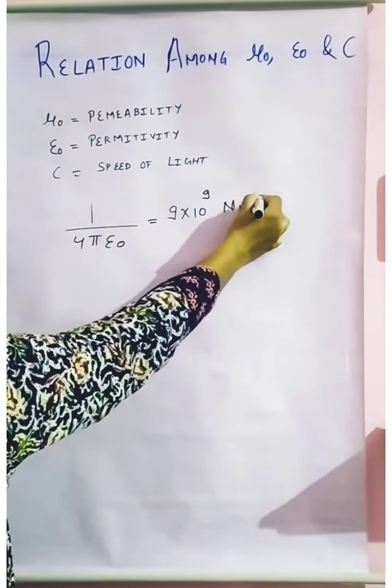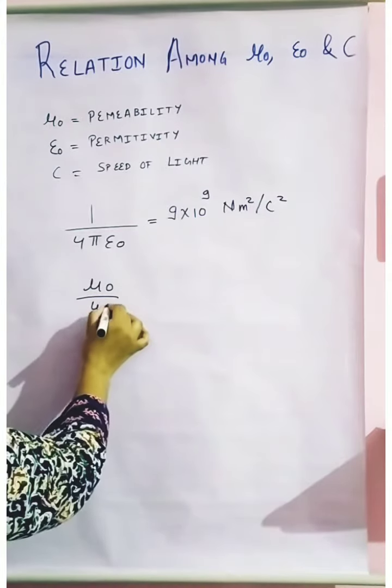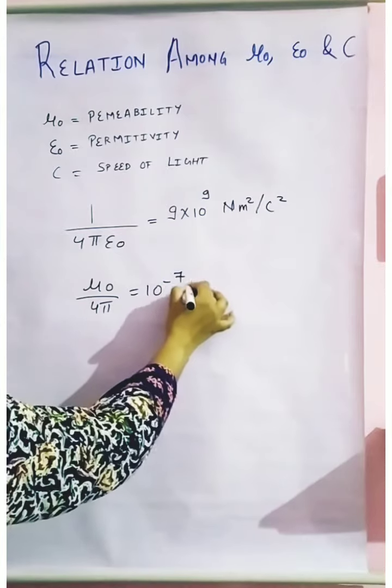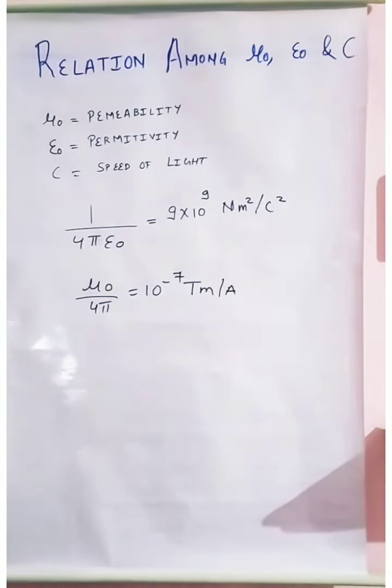Now in the previous video we have discussed about the value of μ₀. This is the value of ε₀ which we have seen, and now what is the permeability μ₀ upon 4π, which is equal to 10 to the power minus 7 tesla meter per ampere, or this can be weber per meter ampere. This is the unit which we have used.